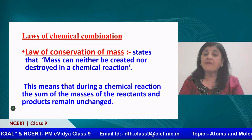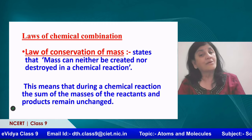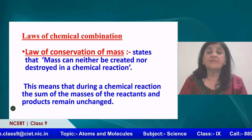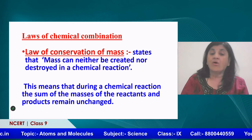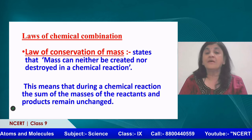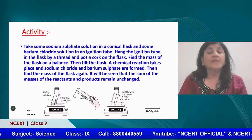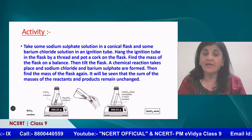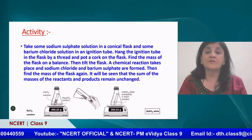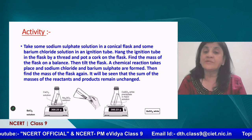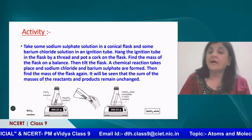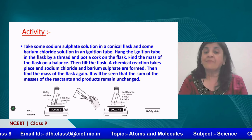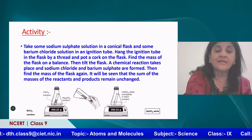The reactants combine with each other to form a product and mass of both sides remains equal. Left-hand side is always equal to the right-hand side. To demonstrate this, take a conical flask with sodium sulfate solution and add some barium chloride solution in an ignition tube — that small test tube. Hang the ignition tube in the flask by a thread and put a cork on the flask, as you can see here in the figure.